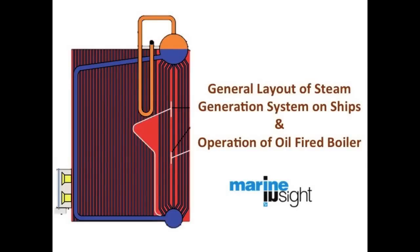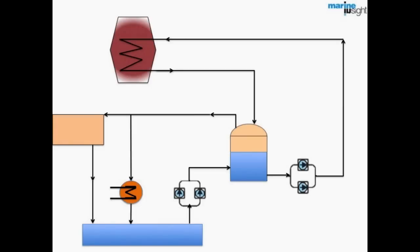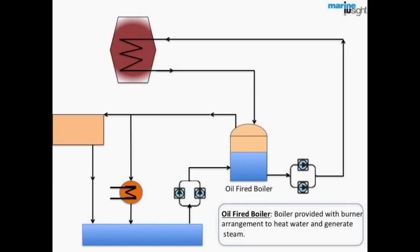This video shows a general layout of steam generation system on ship and operation of oil fired boiler. We will start with the most important component of this system, an auxiliary boiler which is provided with a burner arrangement to heat water and to generate steam.